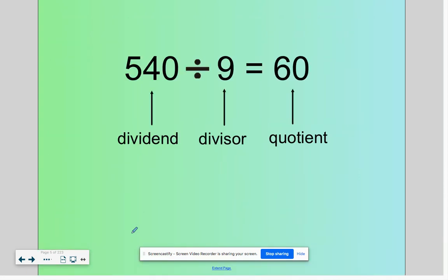Again, 540 is the dividend, nine is the divisor, and our answer is 60 or 60 bags.